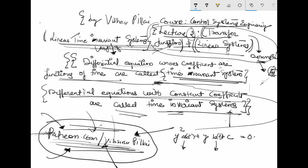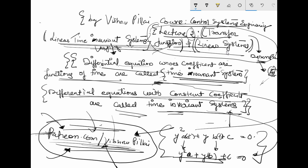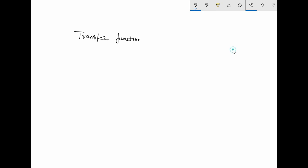If the coefficients are not functions of time — for example, simply C₀y'' + C₁y' + C₂ = 0 with constant coefficients — then this is called a time invariant system. That is the difference at a very basic level. The next topic in this lecture is the transfer function.